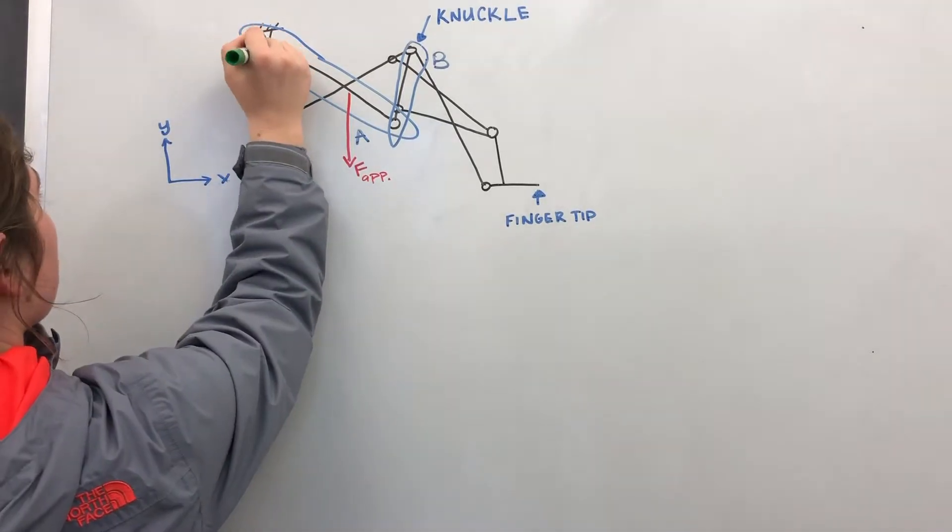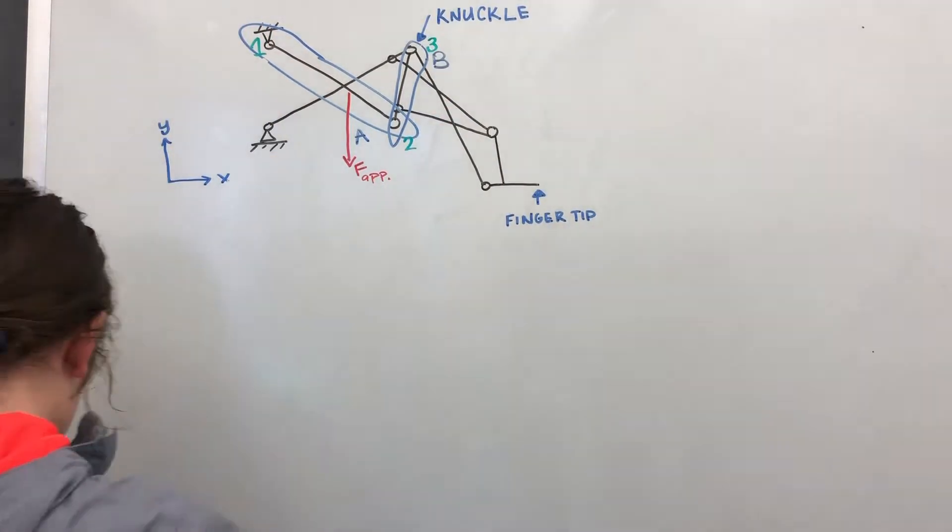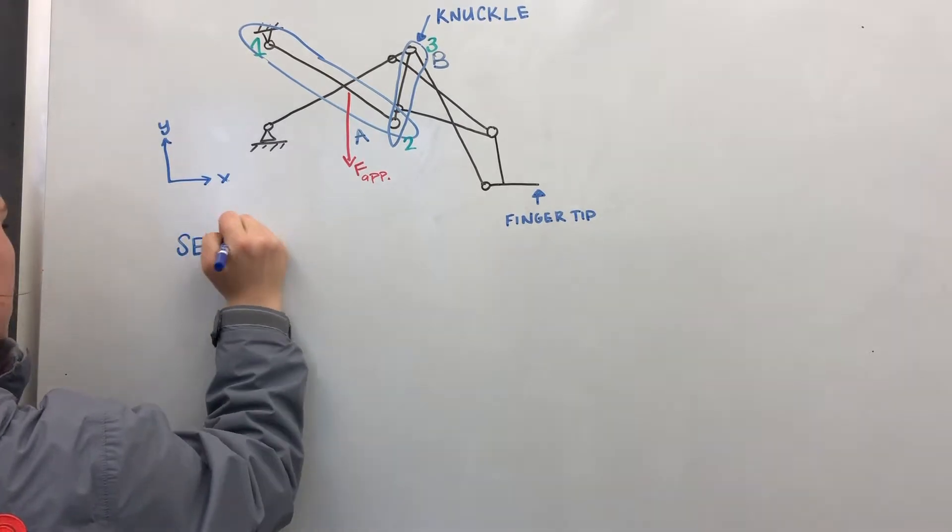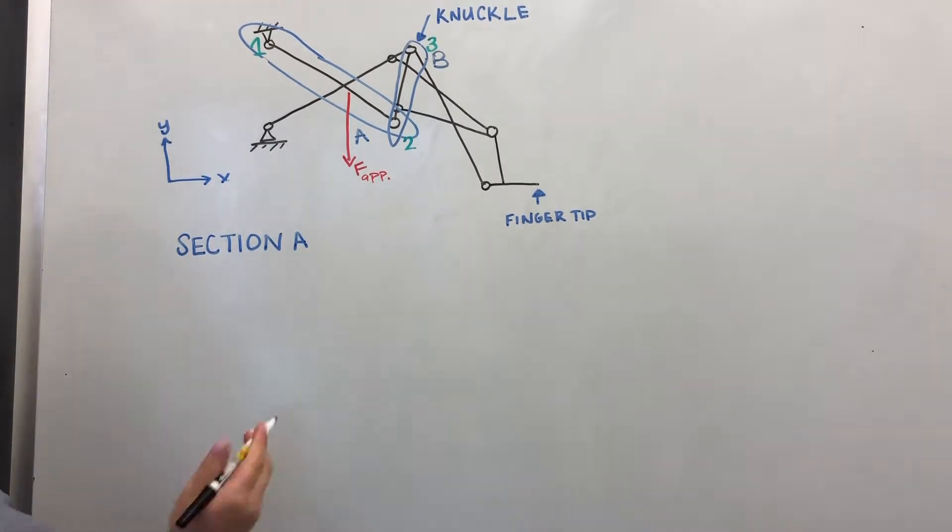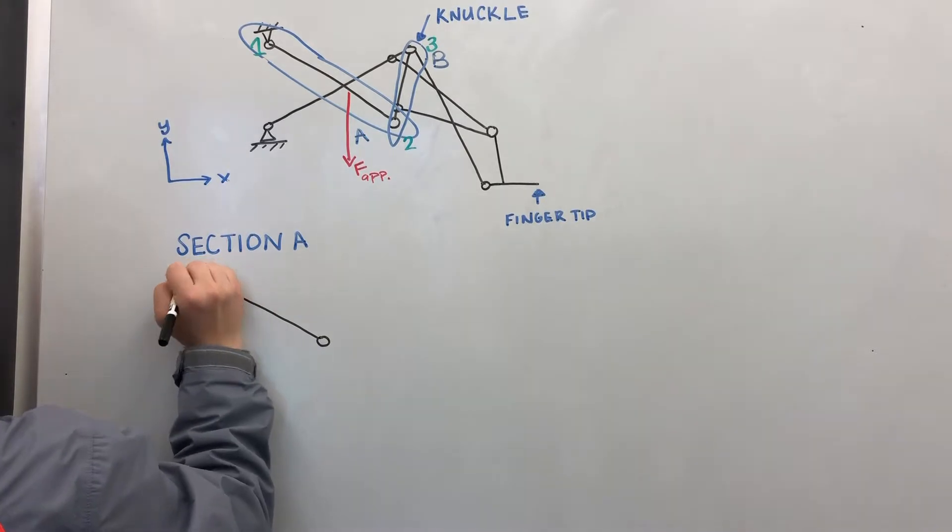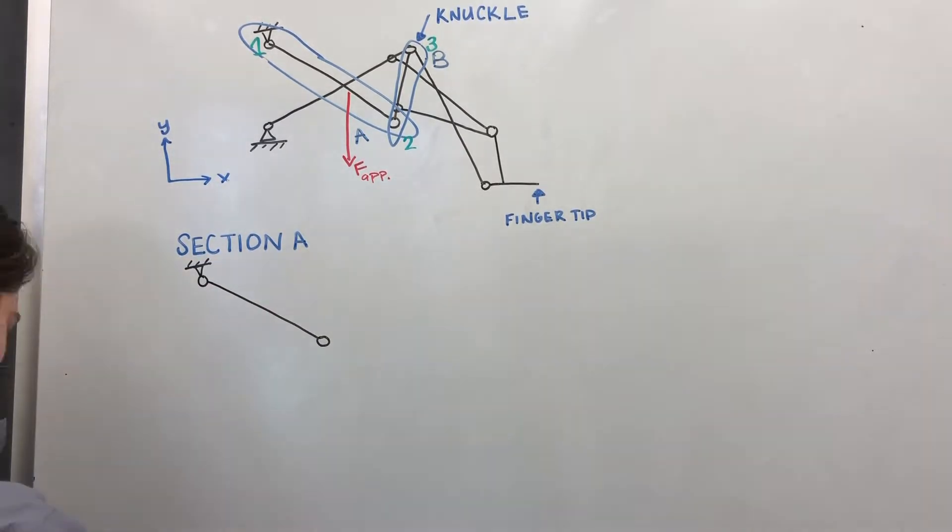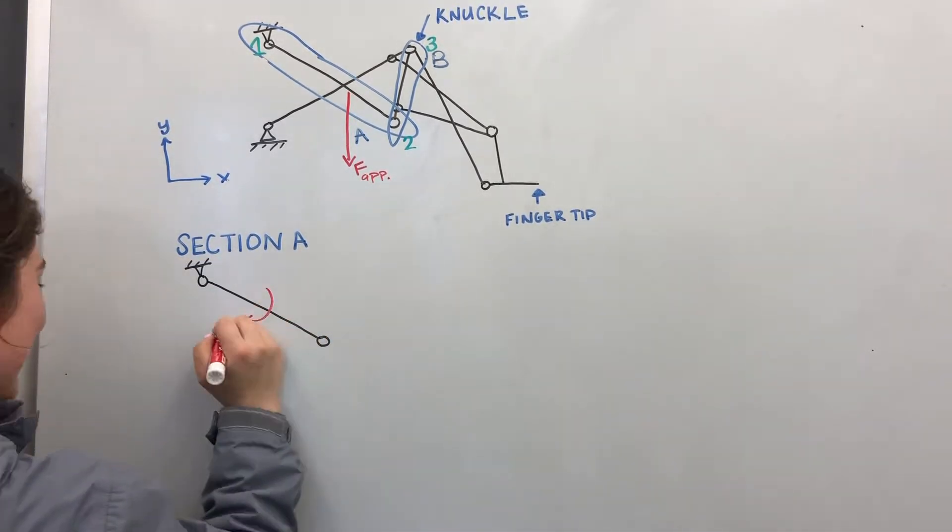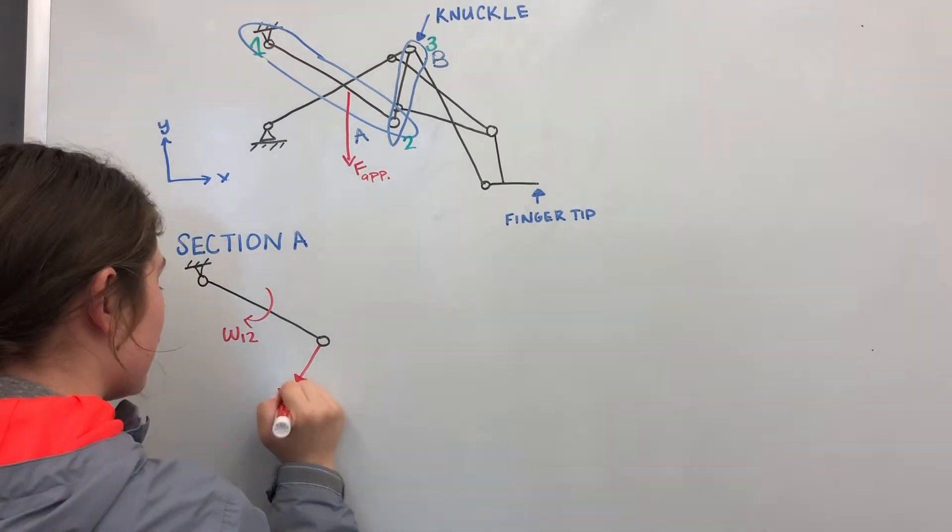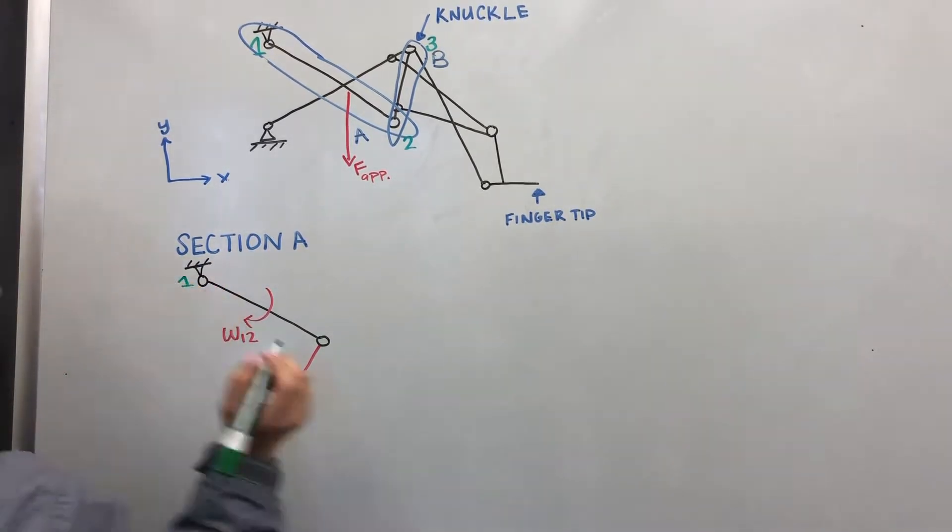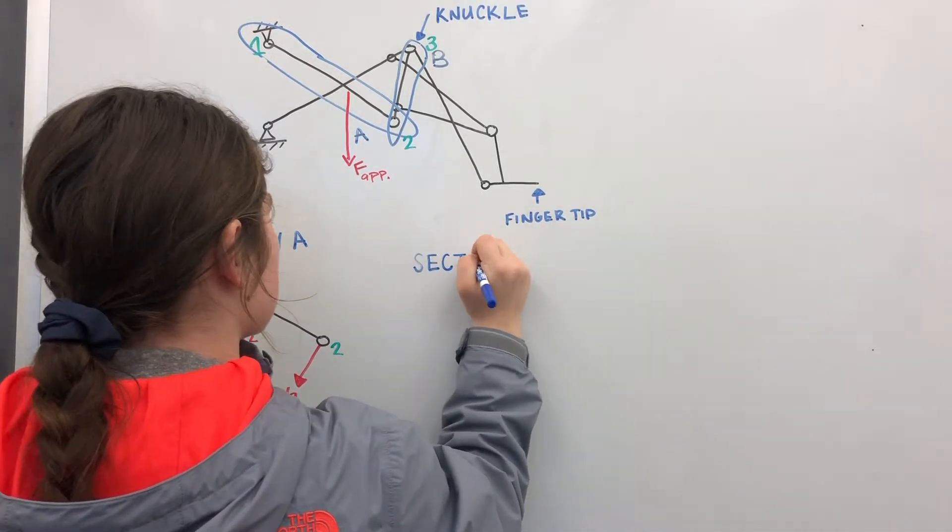Looking more closely at section A, we can see that point 2 rotates in a circle about the anchor, labeled point 1. We know that due to the laws of relative motion, to determine the velocity of point 2, we can use the radius, which in our case is the length of link 1-2, times the angular velocity omega 1-2, which is determined by the applied force.